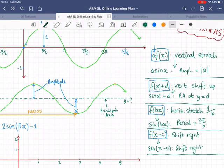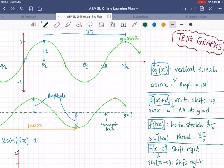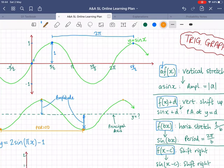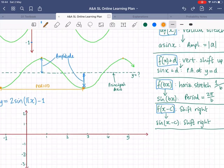And then finally, if you have minus c inside the bracket, it just shifts right, and we have no special terminology for that with sine graphs, it also just shifts right. So if I had this graph here, and I shifted it right, it would just look like that. There's no special word for it, it just shifts right.